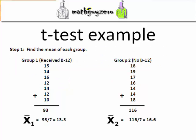Step one: Find the mean of each group. You add up all the different measurements, divide by the number of measurements. You should get the means. They're listed in front of you.